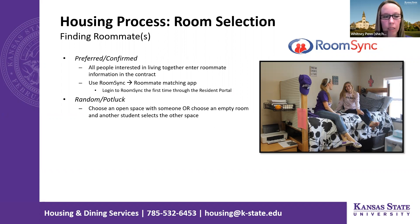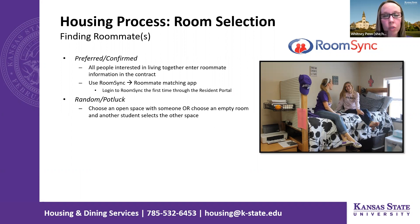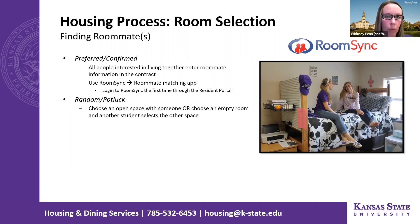If you haven't identified a roommate, you can use a random or potluck method — either choose an open space in a room where someone has already selected a bed, or choose an empty room and another student may fill the other space. You don't necessarily have to have roommates identified before room selection opens. We encourage you to find a roommate before room selection begins if you want one, but you can continue looking even after the process has opened.